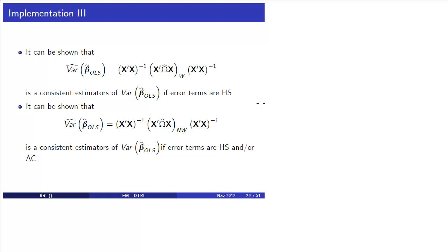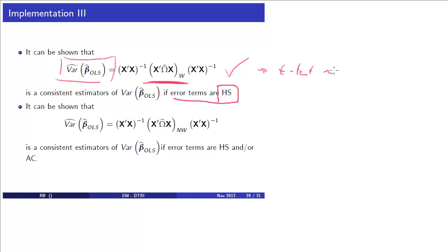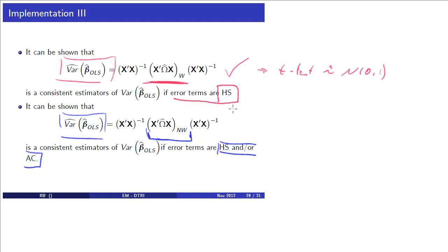To wrap up: if error terms are heteroscedastic and we calculate Var(β̂ OLS) using the White estimate, then the t-test is asymptotically standard normally distributed. Equally, if we have heteroscedastic and/or autocorrelated error terms and use the Newey-West version, the t-test is again asymptotically standard normally distributed.